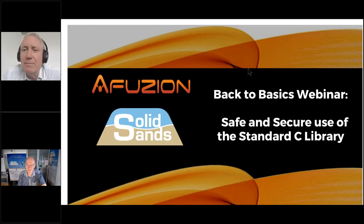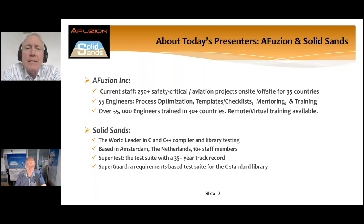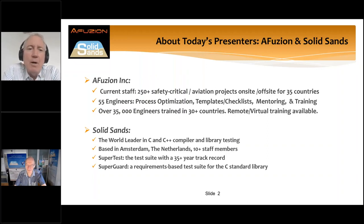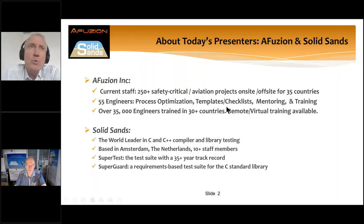A quick note about us: eFusion is a big-small company — we've got a little more than 55 people now and we've been growing. We work on-site and off-site throughout the world, with several engineers working full-time here in Italy. We do process optimization, aviation — almost always safety critical — templates, checklists, DO-178, DO-254 mentoring, training, a lot of certification, and systems, software, hardware, and safety work.